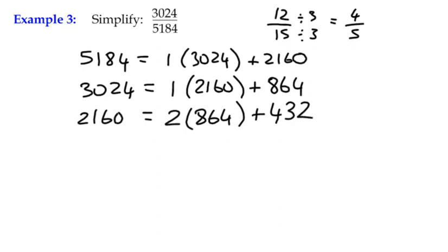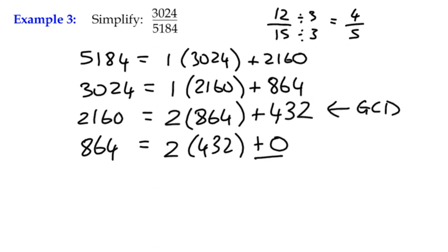Still not a 0 remainder. Everything shoves over to the left. 864, and we're dividing by 432, and that divides exactly 2 times, which means we've got a remainder of 0. If that's a remainder of 0, there is our greatest common divisor of 432.